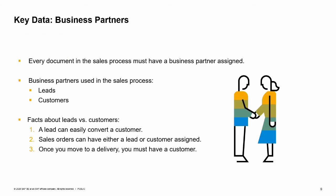Every document in the sales process must have a business partner assigned. The business partners used in the sales process are leads and customers. A lead can easily convert to a customer. A sales order can have either a lead or a customer assigned, but once you move to a delivery, you must have a customer. Customer master data describes people and organizations to whom your company sells products and services, and is used as the foundation for documents related to processing and fulfilling orders and for the wizard for dunning customers.